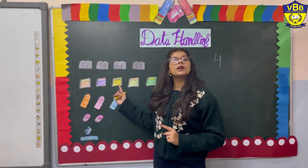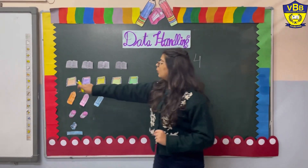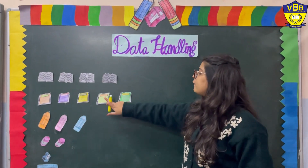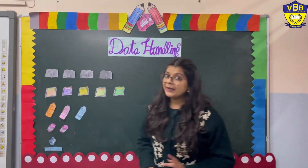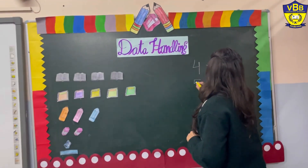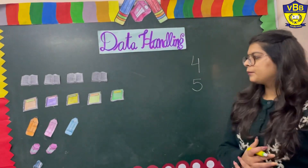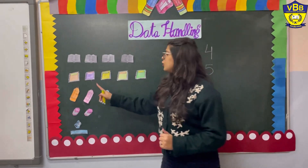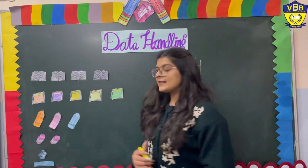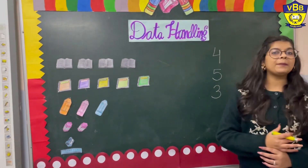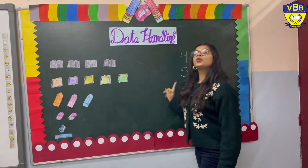Now let us count the pencils: 1, 2, 3. How many pencils? Three pencils. Now let us count the number of erasers: 1, 2. How many erasers? Two erasers.